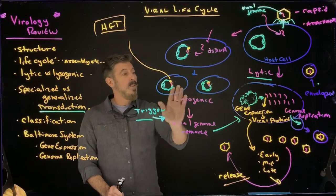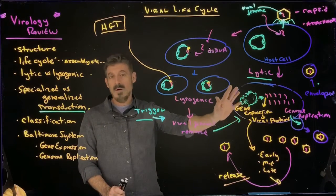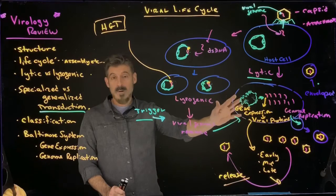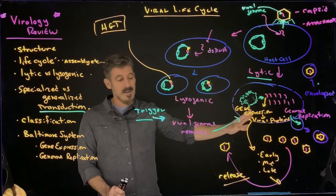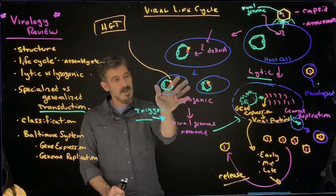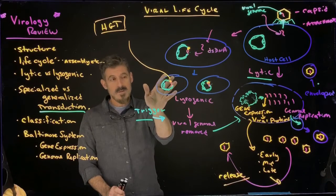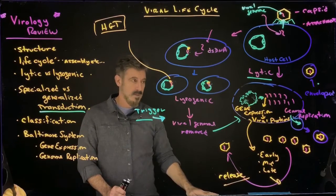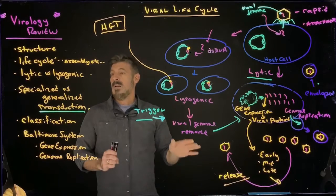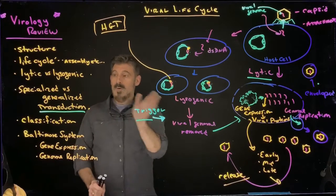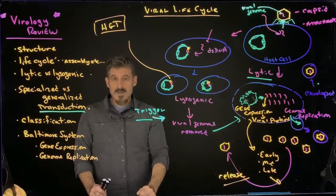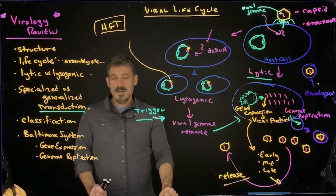Lysogenic is sort of where this is essentially put on hold for a while. It's not that it's not going to happen, or that it's a totally different process. It's just that first, we're going to hide out in the host cell's DNA, and then we'll eventually have this occur. And then you can make sure you review the generalized specialized transduction so you can see and understand the link between them.